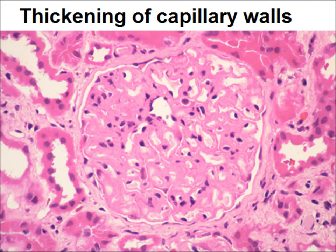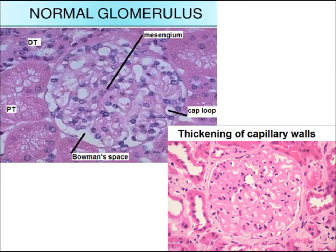In this photomicrograph, you can see thickening of capillary walls. The capillary walls are thickened, but there is no increase in cellularity. You can compare both photomicrographs — the left side shows a normal glomerulus and the right shows thickened capillary walls.